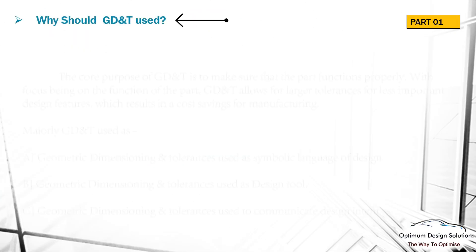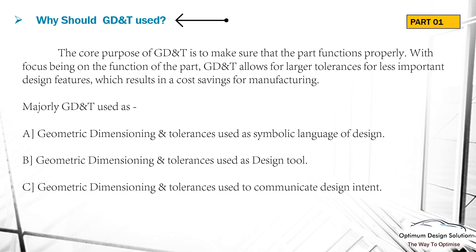Why is GD&T used? The core purpose of GD&T is to make sure that the part functions properly. With the focus being on the function of the part, GD&T allows larger tolerances for less important design features, which results in cost savings for manufacturing. GD&T is majorly used as a symbolic language of design. GD&T is used to specify the size, shape, location, and orientation of features of any size, and it reflects the actual relationship between mating components.